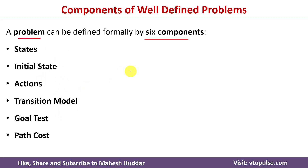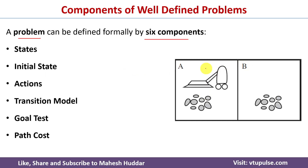In the vacuum world example, there are two locations: location A and location B, and there is an AI-based vacuum cleaner. Location A or B can be either dirty or clean, and this AI-based vacuum cleaner can be present in either location A or location B. We need a set of actions — this AI-based vacuum cleaner can move from location A to location B.